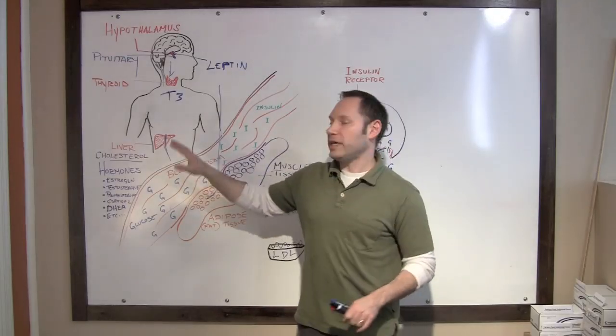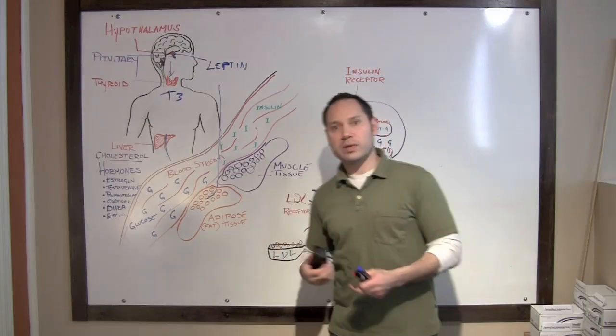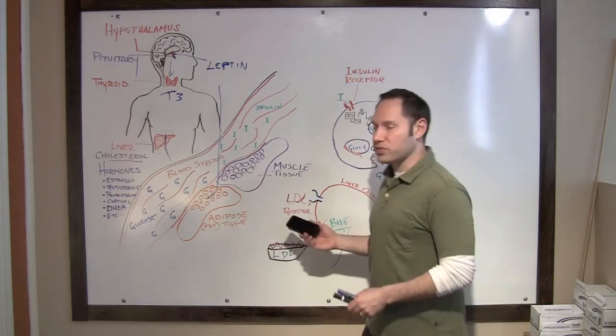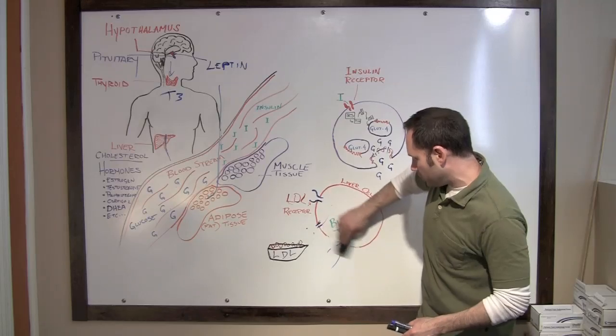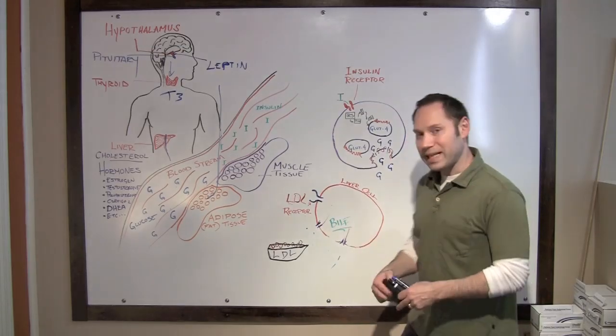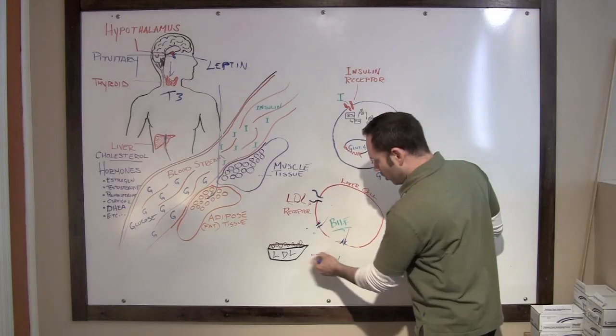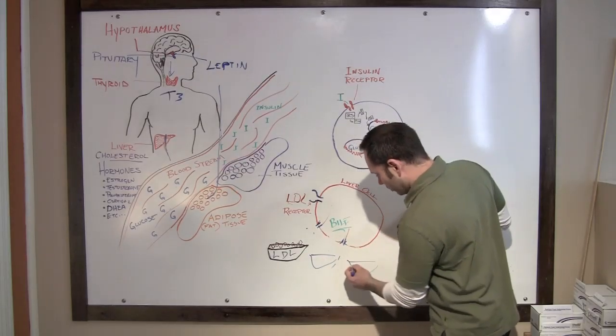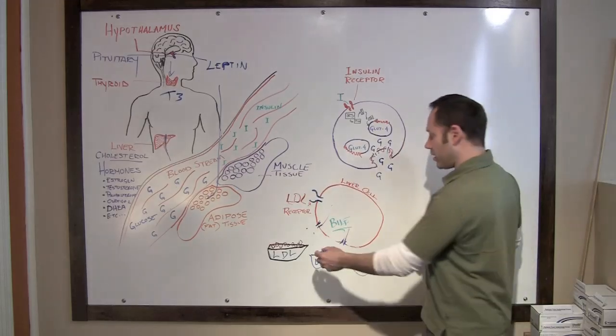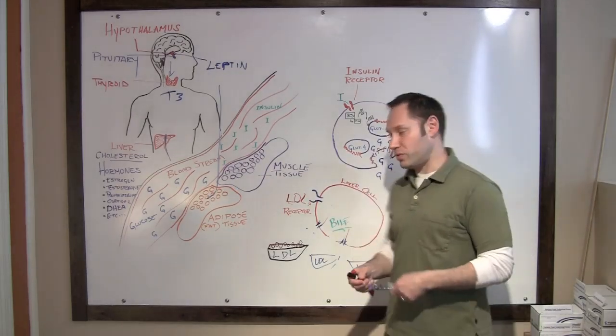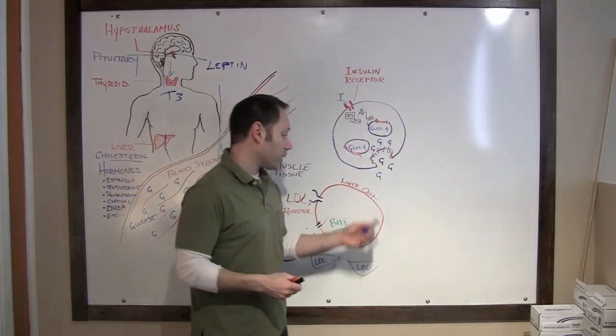So what happens if your thyroid is suppressed and you're not making enough thyroid hormone? It's going to send a signal to the cells to down-regulate these LDL receptors. And if you have less LDL receptors, you're going to have more LDL particles floating around in the blood, because they're not going to be taken up into the cell where the cholesterol is going to be used to make bile and other vital substances.